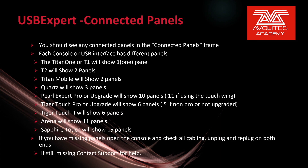Once you have the service running, you should see any connected panels in the Connected Panels frame. Each console or USB interface has different panels. The Titan 1 or T1 will show one panel, the T2 will show two, Titan Mobile will also show two, Quartz will show three. The Pearl Expert Pro or when upgraded to the Pro Standard will show 10 panels — 11 if you're using the TouchWing. The Tiger Touch Pro or one that has been upgraded will show six panels, five if a non-Pro or not upgraded. The Tiger Touch 2 will show six panels, the Arena will show 11 panels, and the Sapphire Touch will show 15 panels.